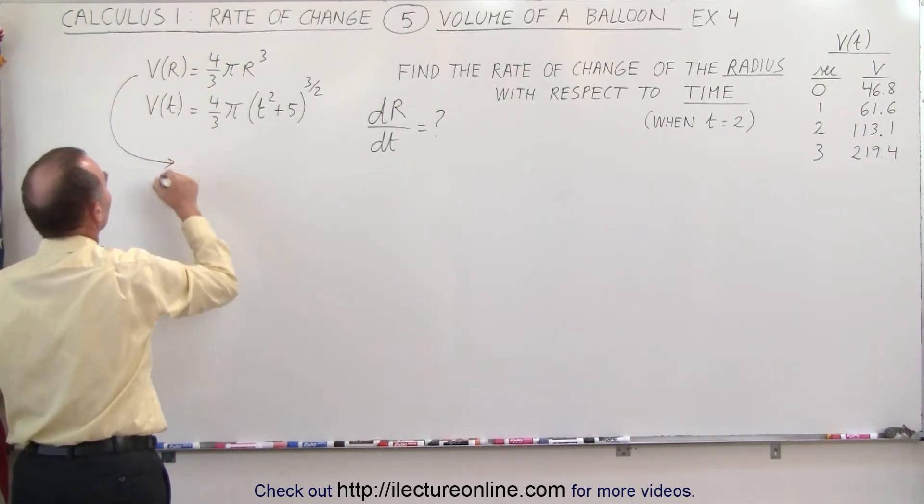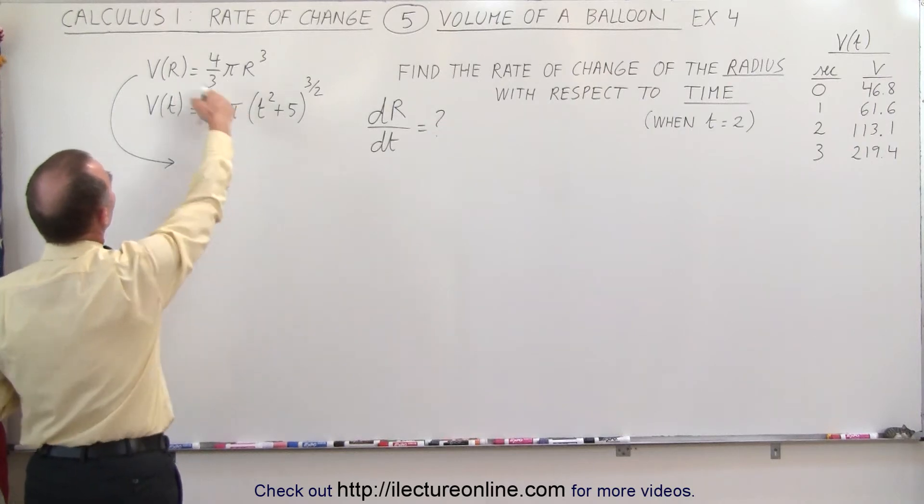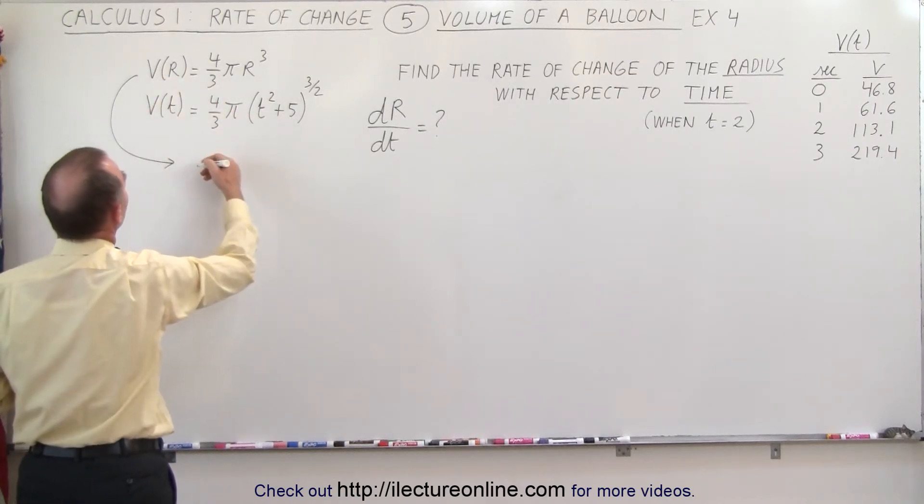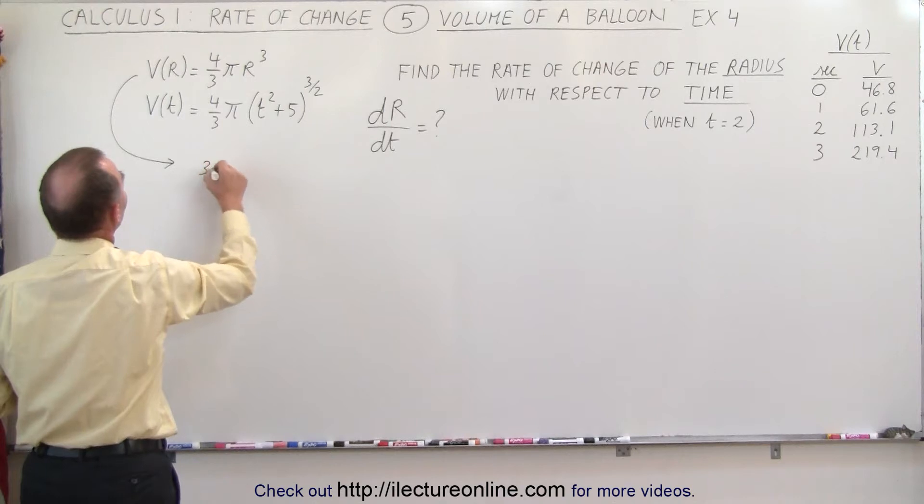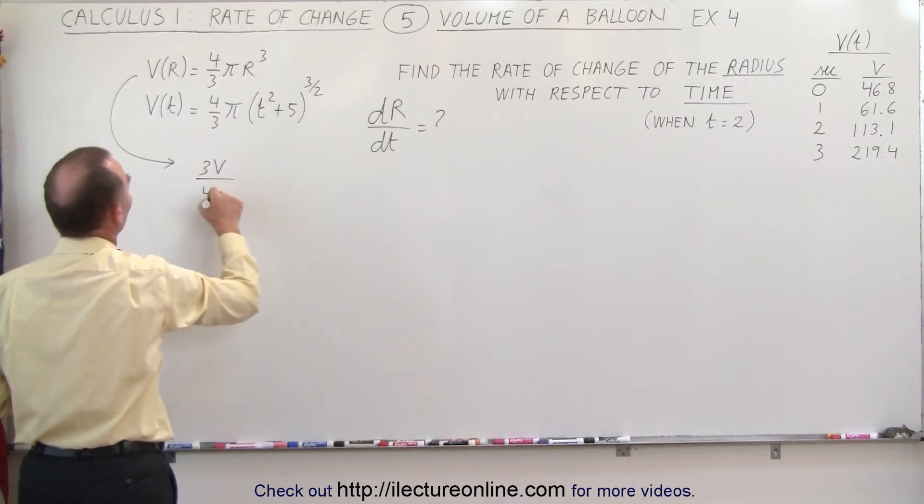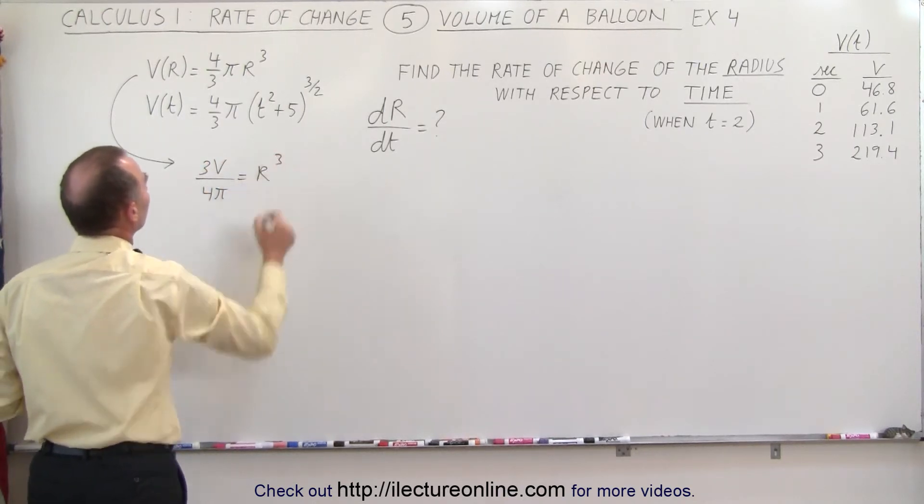Using this equation right here, we're going to move the 3 across, the 4 down here. So this becomes 3 times the volume, divided by 4π, is equal to the radius cubed.